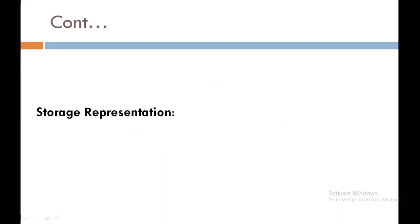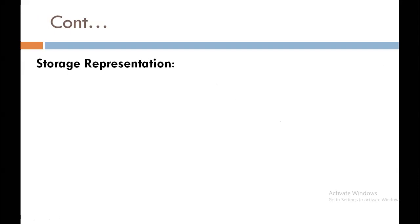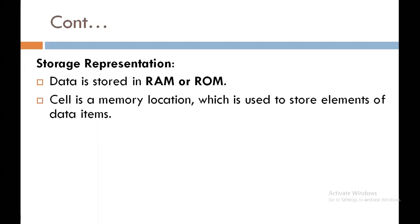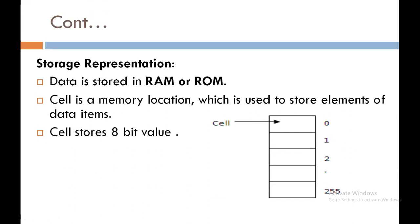Next, storage representation of data. Data is stored in a computer's memory, in RAM or ROM. A cell is a memory location which is used to store elements of data items. A cell stores an 8-bit value. It contains various numbers of cells. For example, if it starts from 0 and ends with 255, it stores 256 numbers of data. Each and every location is called a cell.